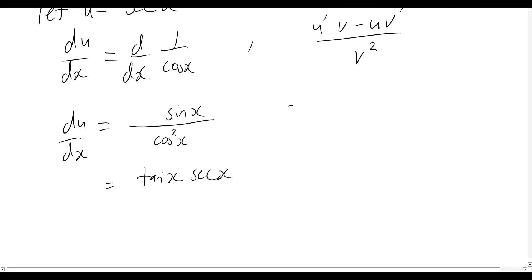So now if du dx equals tan x sec x, then what that means for us now, and let's quickly write that out so it's a bit more clear, is that I can say, therefore, dx must be equal to du over tan x sec x.